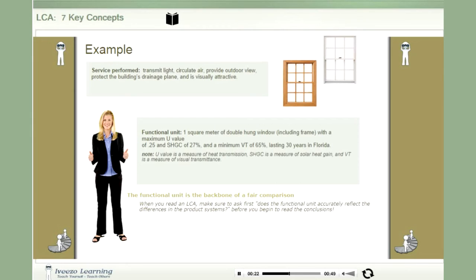and a minimum VT of 65% lasting 30 years in Florida. This functional unit assures that the two windows can be fairly compared.